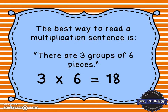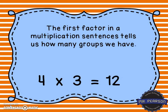The best way to read a multiplication sentence is like this: there are three groups of six pieces, so we have 18 all together. The first factor tells us how many groups we have, the second factor tells us how many pieces are in each group, and the product tells us how many pieces we have all together.